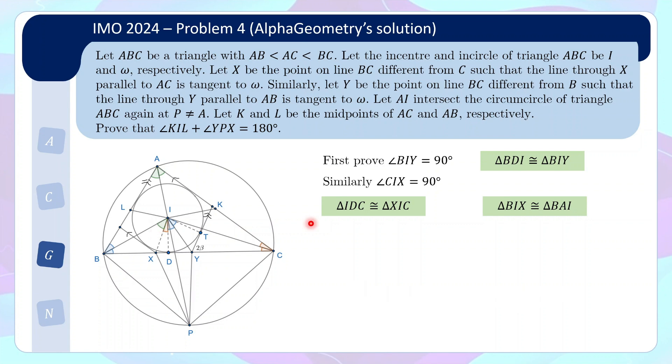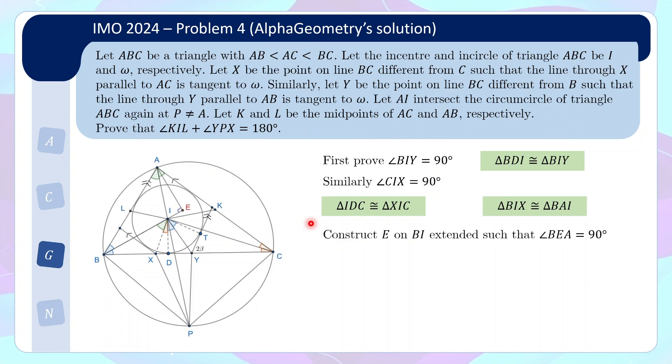Okay. And now comes the most controversial part of the whole solution, which is that the AI actually constructed a new point E as follows. So it extends the line VI to a point E such that angle BEA is 90 degrees. So this new point comes seemingly out of nowhere. And what is the point of constructing E?